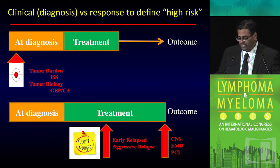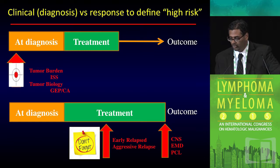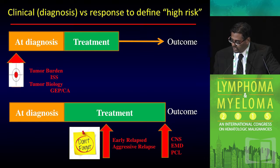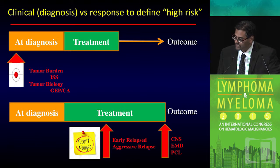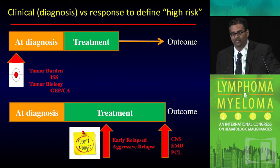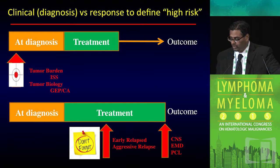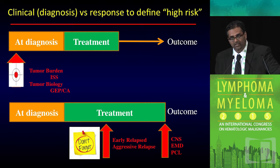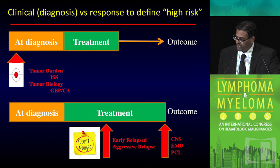We'll look at patients with ISS stage, gene expression profiling, or cytogenetics to identify high-risk myeloma at time of diagnosis. These patients tend to have a short overall survival. What we don't want to forget is that during treatment itself, we can identify patients with high-risk myeloma as well, because ISS stage and cytogenetics are not perfect. Don't forget patients with early relapse or aggressive relapse — those relapsing less than one year post-transplant who may be ISS stage 1 with normal cytogenetics. Also, CNS presentations, extramedullary disease, and plasma cell leukemia are all markers of high-risk disease which may not be picked up at time of diagnosis.